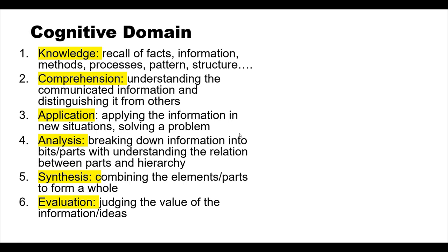The second is comprehension. Comprehension builds on the first level of knowledge. As students acquire knowledge, they process that information toward a higher level of understanding. This enables the learner to interpret the knowledge gained and distinguish it from other knowledge, differentiating between different aspects. The third is application, in which the learner applies the information that has been learned and can apply it in a new situation to solve any problem.